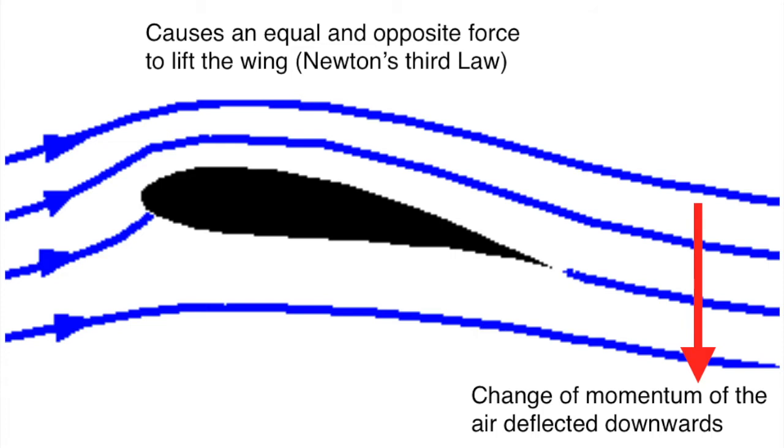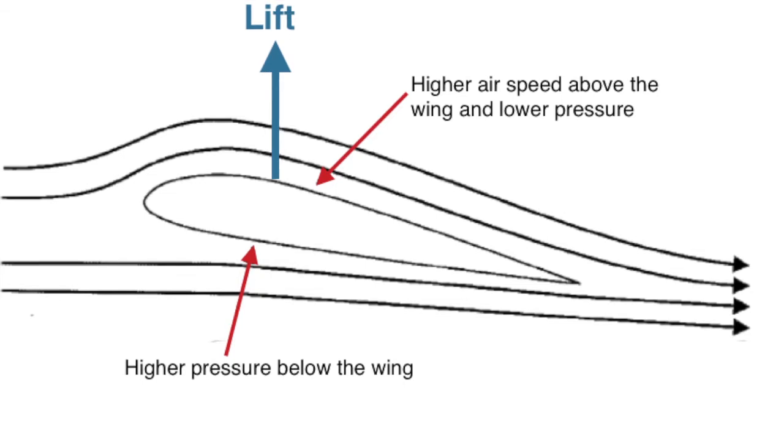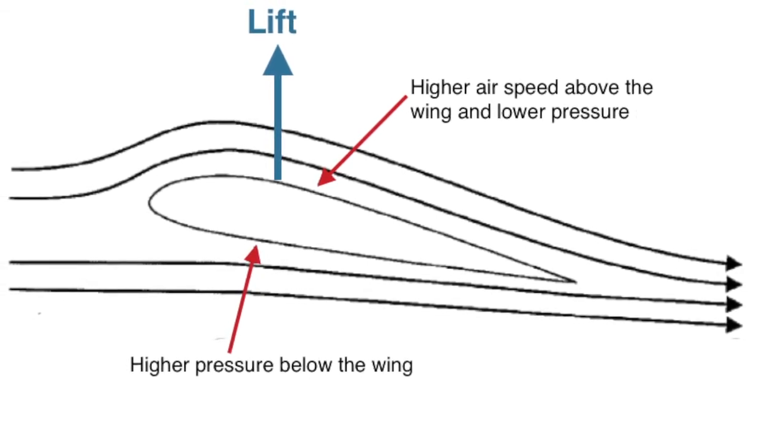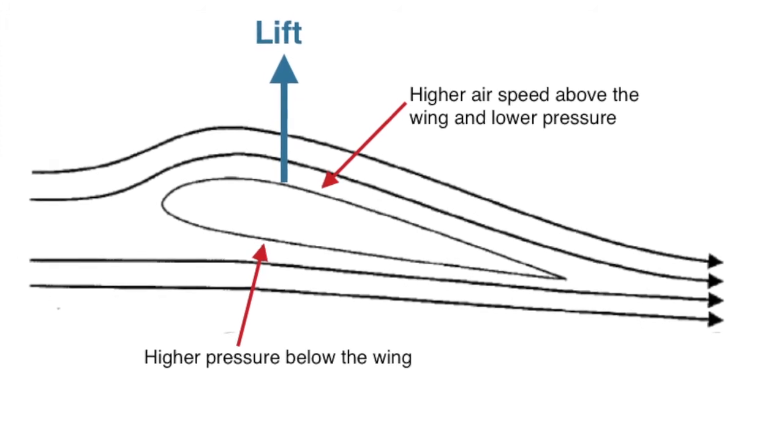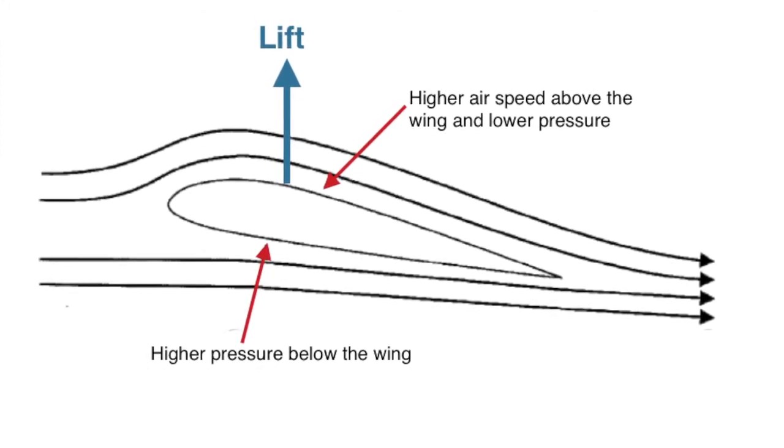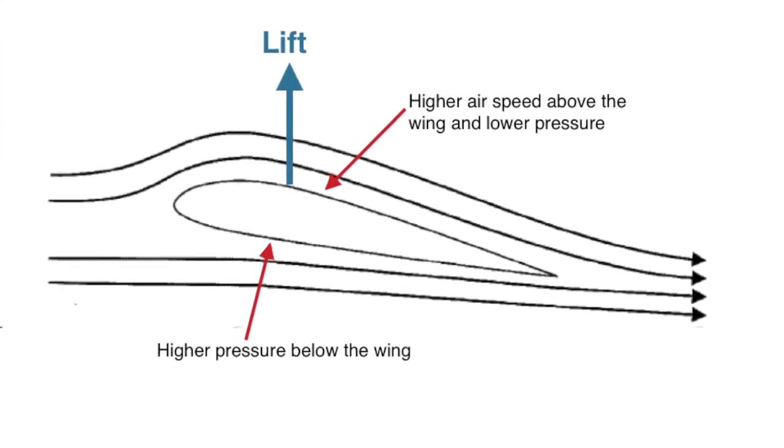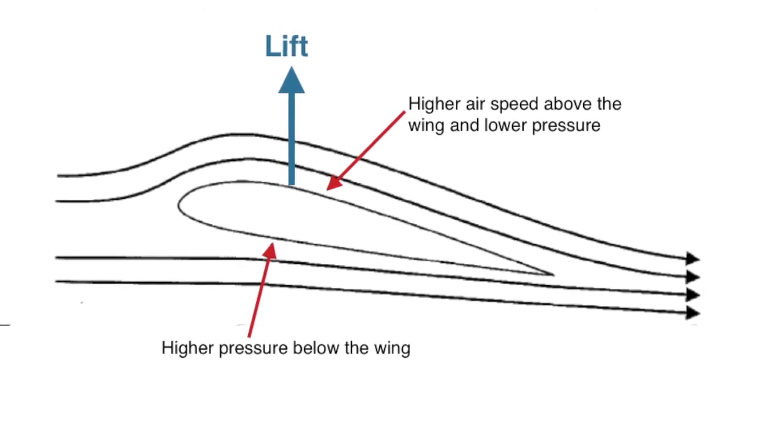The airspeed above the wing is higher and the resulting lift can be explained by the Bernoulli effect. However, the extra distance taken for the air to travel around the top of the wing is not sufficient to explain the large increase in speed needed for a Bernoulli lift.